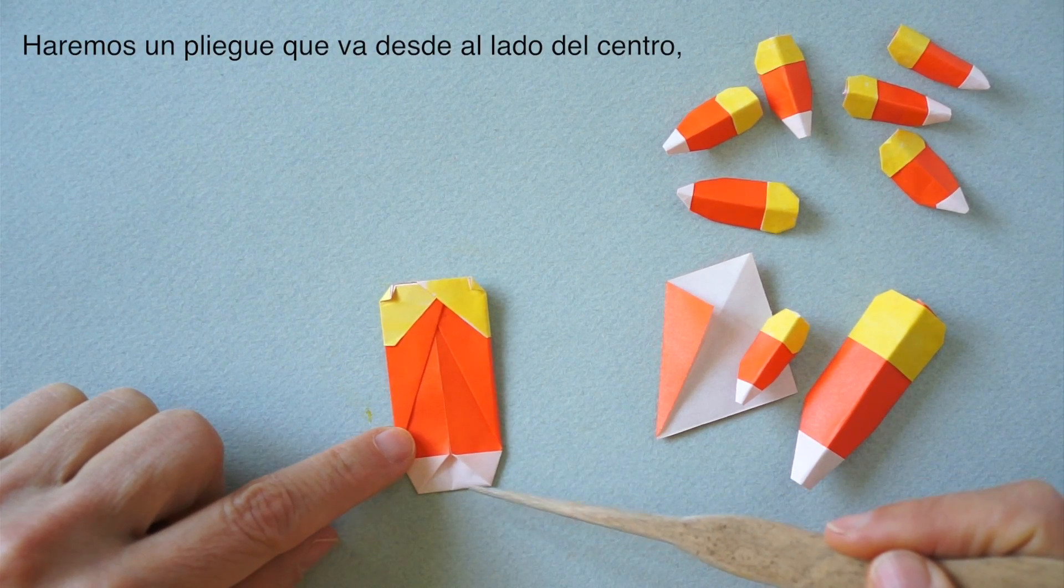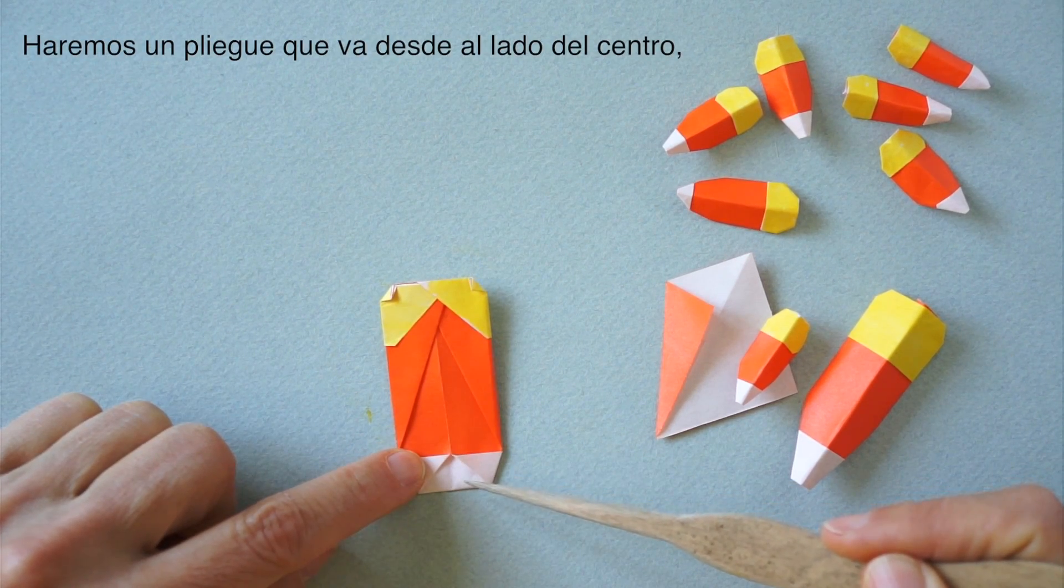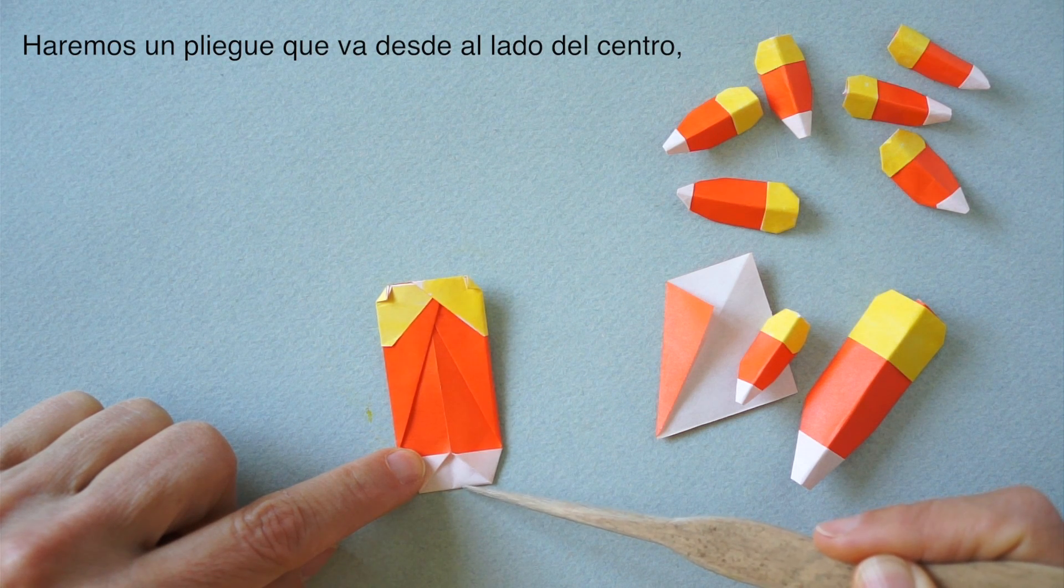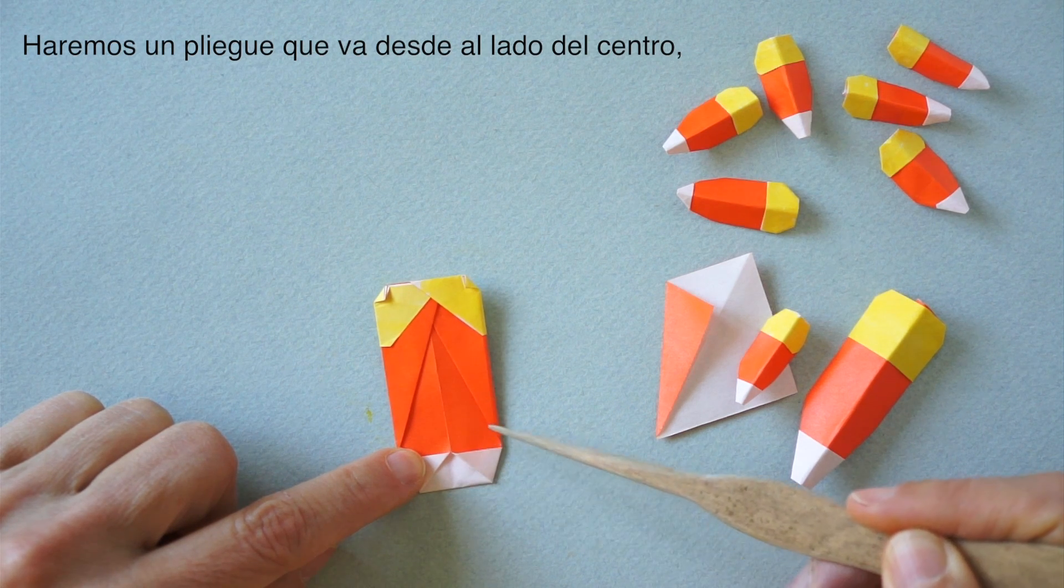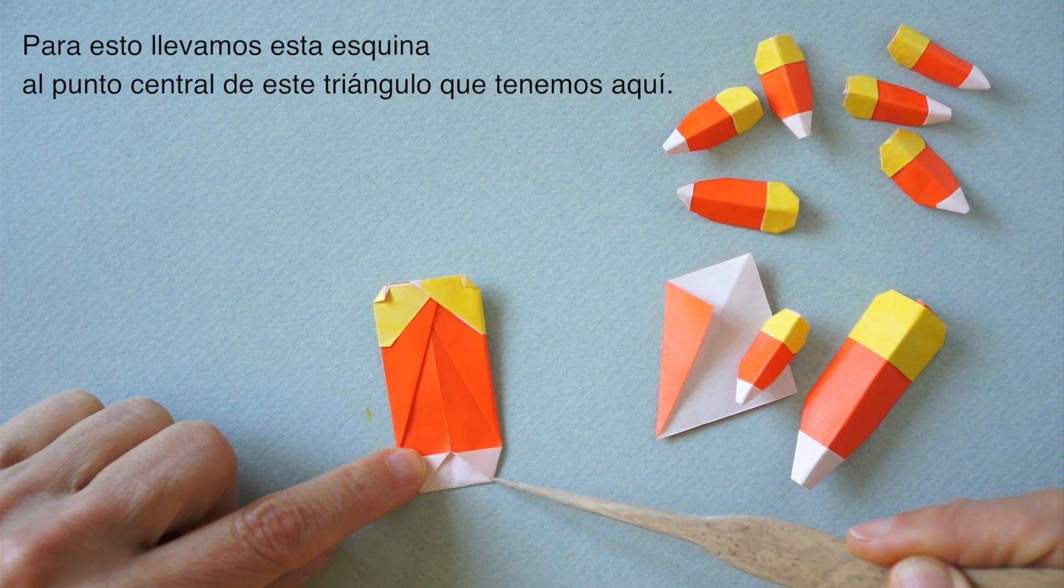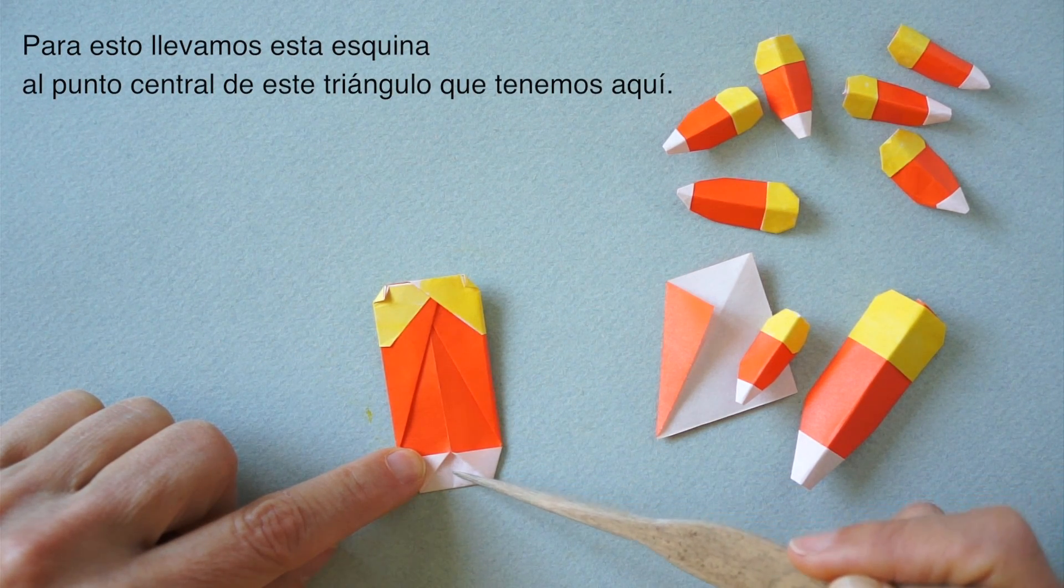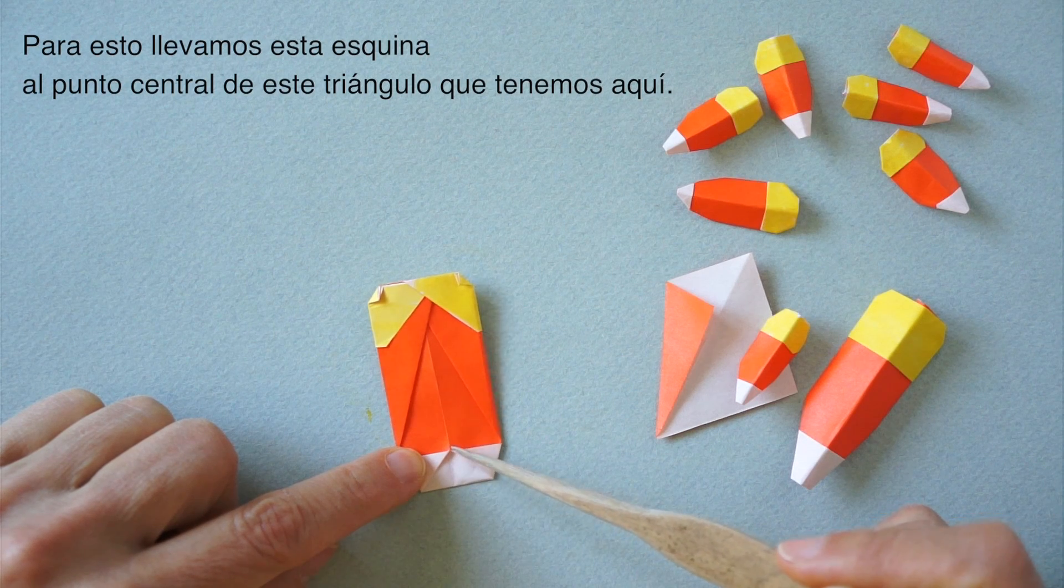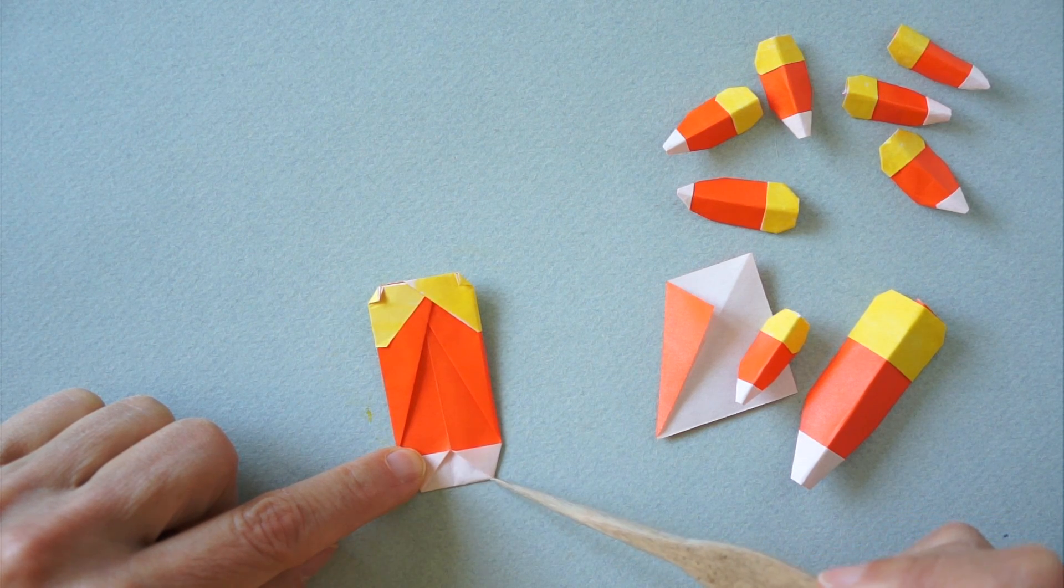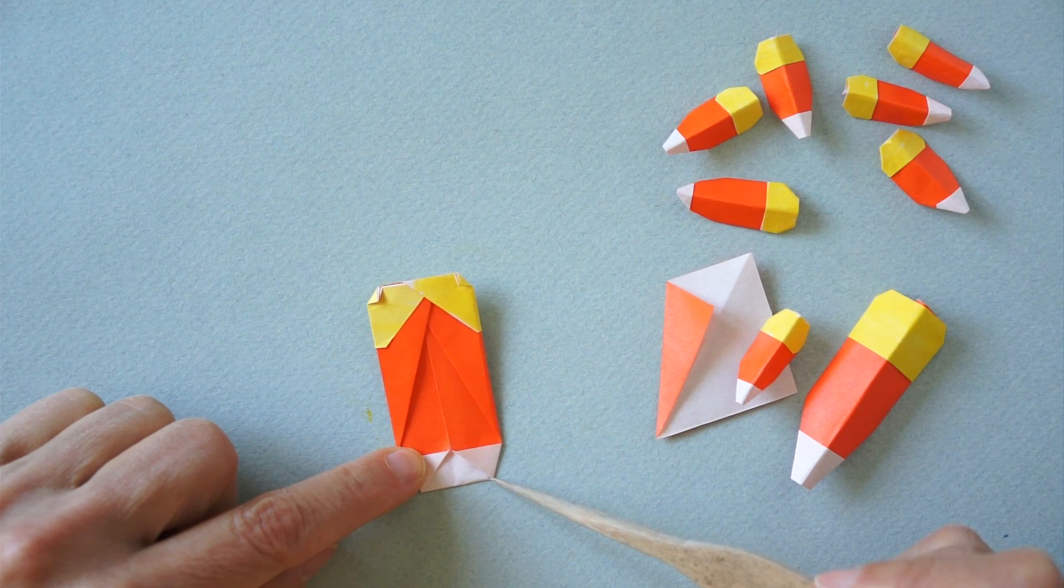Now we are going to be making a fold that comes not quite from the center, but from a little off-center up to this edge by bringing this point to the center here. Notice that there is a little triangle. The center of that triangle is the point to which we bring this corner.